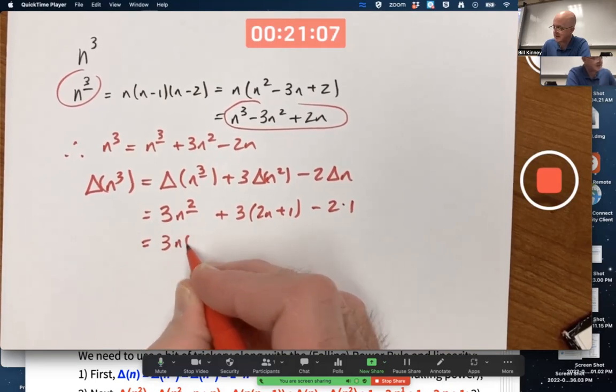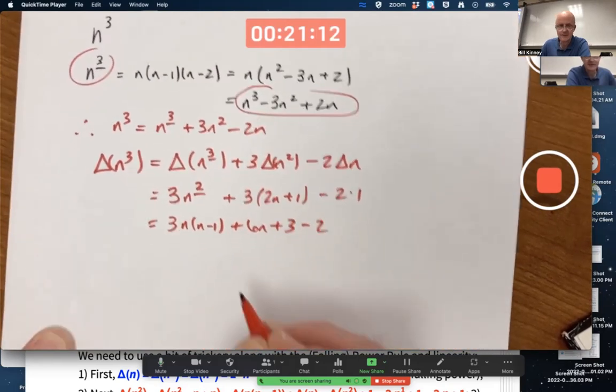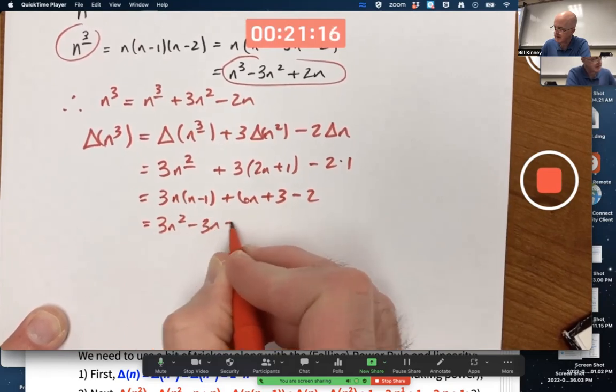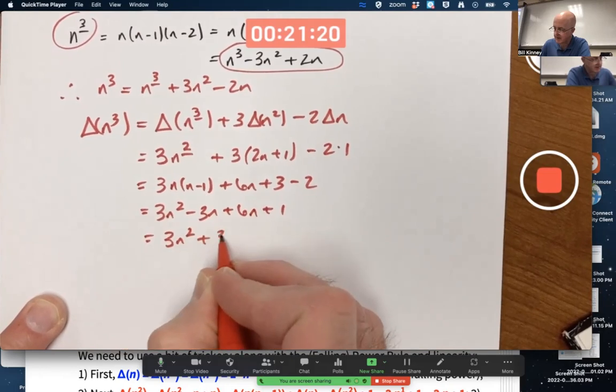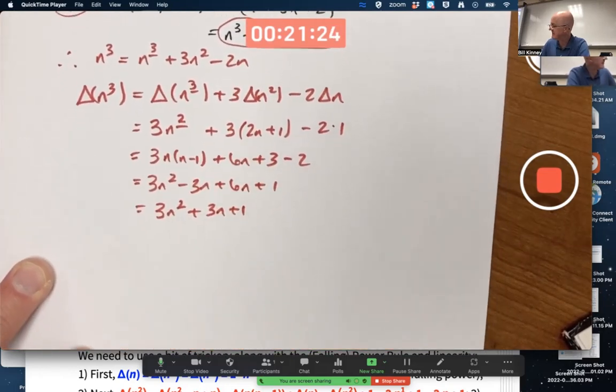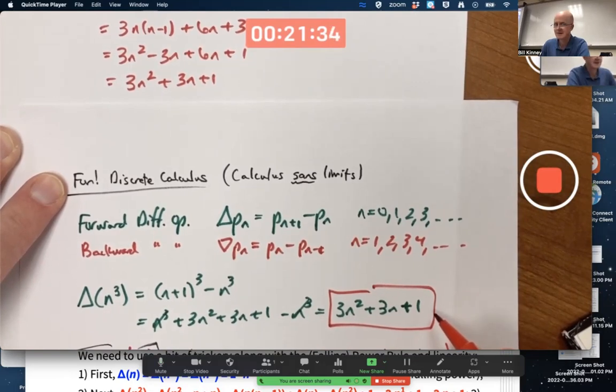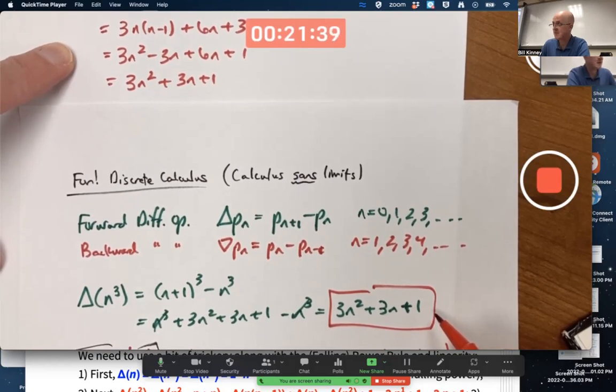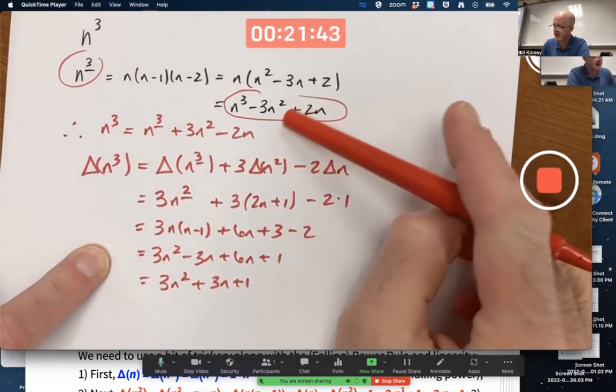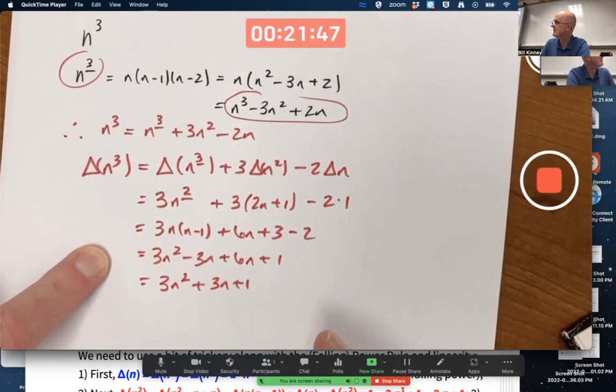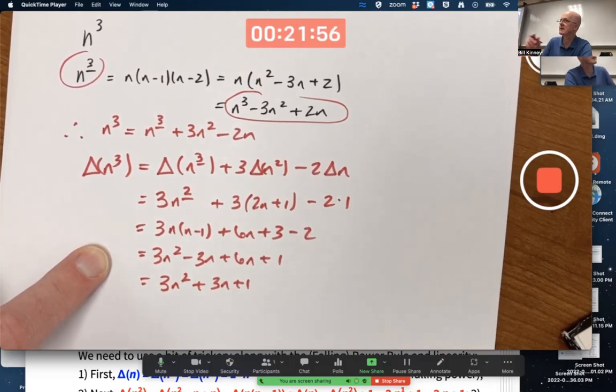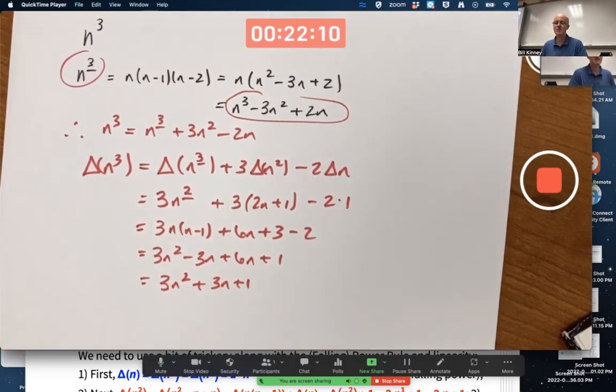Now simplify this. N to the second falling power is N times (N-1). Expand this out. Continue simplifying. 3N^2 minus 3N plus 6N plus 3 minus 2. We're almost done. 3N^2 plus 3N plus 1. Is that the same thing we got on the other piece of paper? Yes, it is. Right there. That we did 10 minutes ago. We got the same answer. You know, what you might say is maybe a more fun way. Using linearity and using the power rule for falling powers. Actually, this may indeed be a better way to go once you've found these discrete derivatives for N, then N^2, then N^3, then N to the 4th, then N to the 5th, then N to the 6th, for example. Might be a better way to find a discrete derivative than N to the 7th, this method. Kind of a fun little method using properties of these discrete derivatives that I think I have put on exams before.